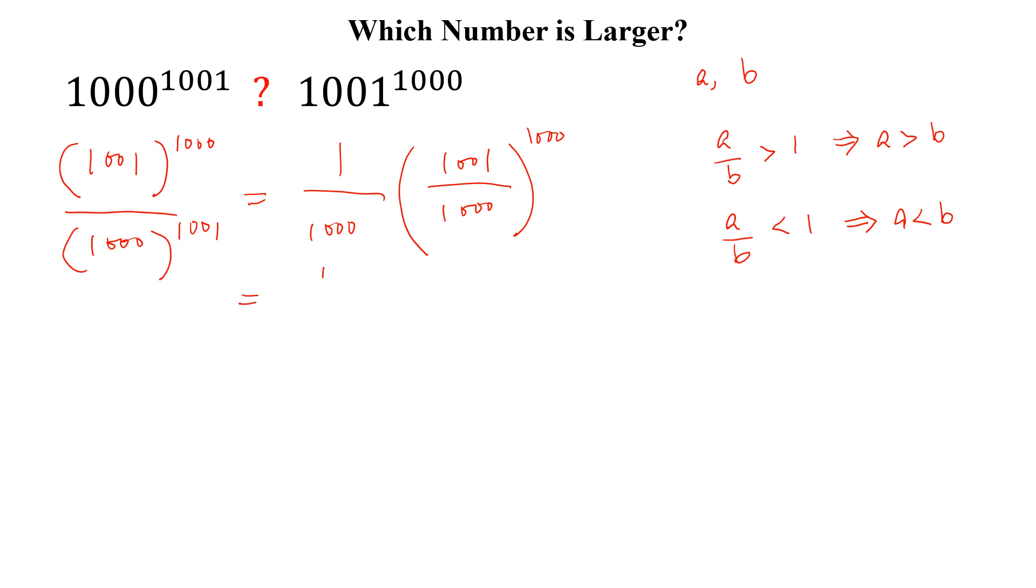Now, we can write this as 1 over 1000 times 1 plus 1 over 1000 whole to the power 1000.